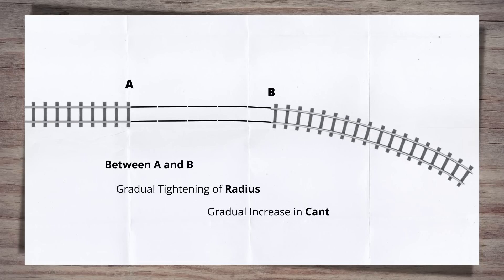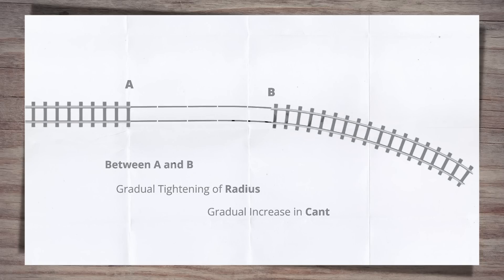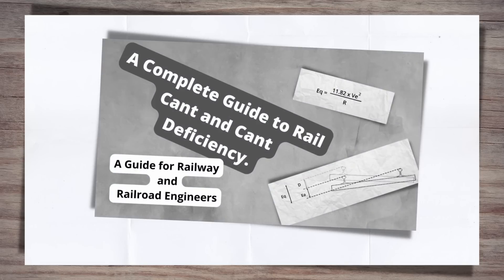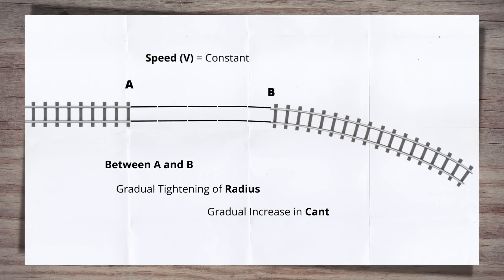The gradual tightening of the curve also leads to a gradual increase in cant. The level of cant is linked to both the curve radius and the line speed via this equation. For more on cant, please check out my video, The Complete Guides Railway Cant, linked at the top right now and in the description below. As the line speed, V, is constant but the radius is changing, so must the level of cant. As the radius varies along the length of the transition, so does the cant, until it reaches the level required for the curve the transition is connected to.